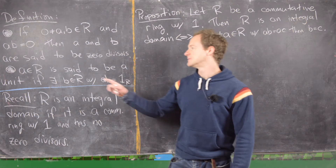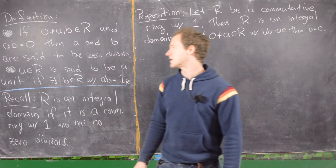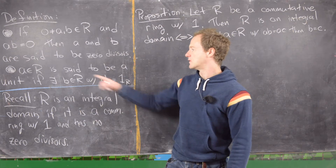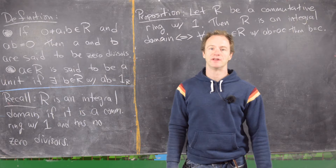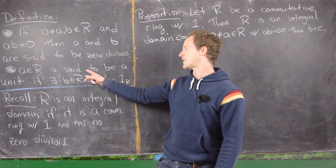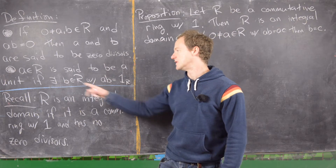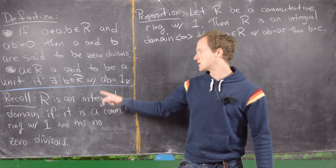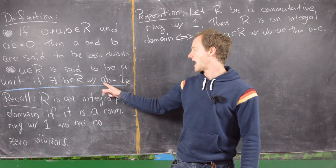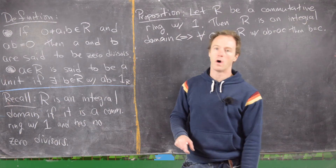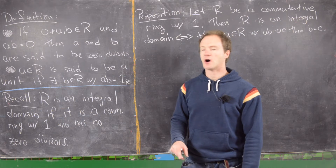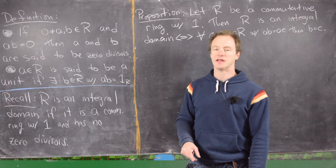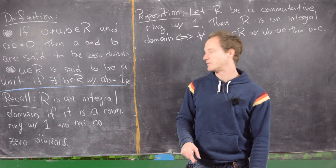Next, if we have an element A in R and it has an inverse, then we say it's a unit. We can re-read that as: A is said to be a unit if there exists a B in R such that A times B equals 1_R, where 1_R is the identity within that ring.